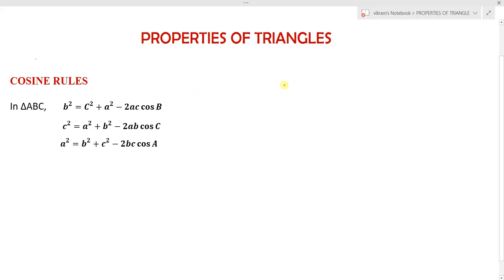In this lecture, we are going to learn about the cosine rules. In triangle ABC, the cosine rules are: b² = c² + a² - 2ac·cos B, c² = a² + b² - 2ab·cos C, and a² = b² + c² - 2bc·cos A. These are called the cosine rules or law of cosines.